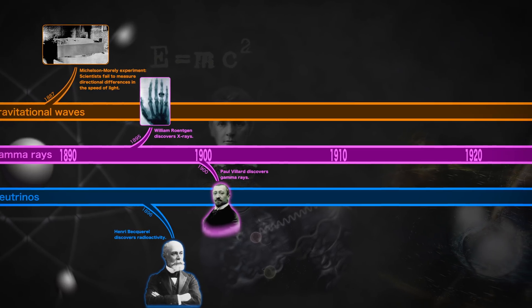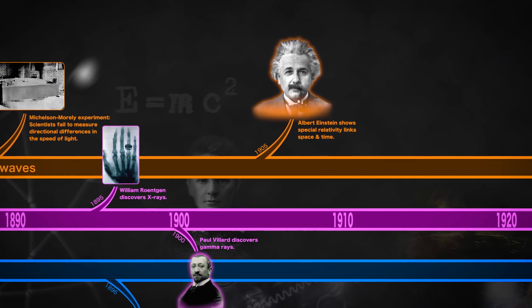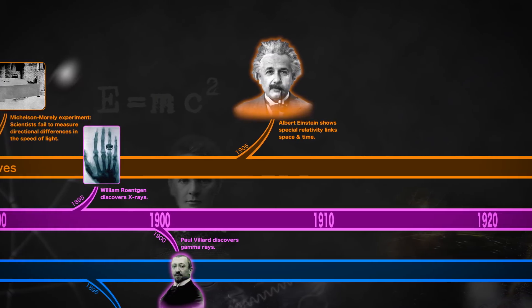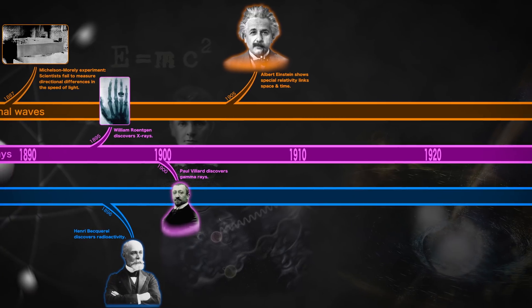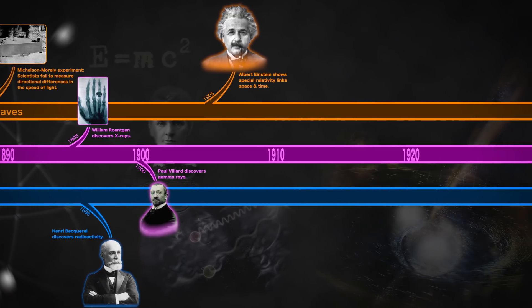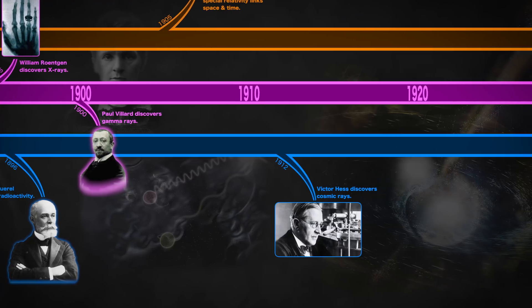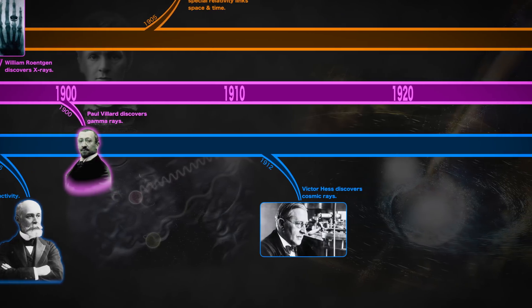Solving this puzzle led to Einstein's special theory of relativity, which assumed light in a vacuum moves at a constant speed that nothing can exceed. His theory formed a theoretical basis for particle physics, which in 1912 incorporated an unexpected source: a rain of particles from space called cosmic rays.